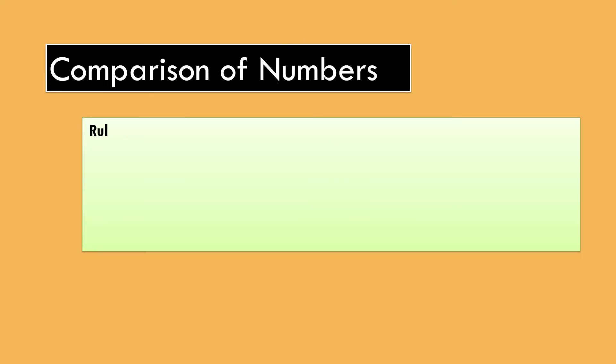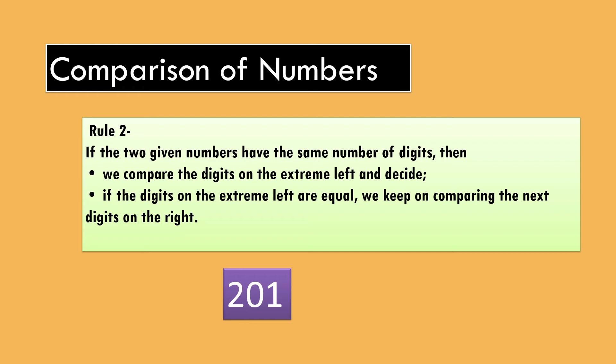Rule 2: If the two given numbers have the same number of digits, then we compare the digits on the extreme left and decide. If the digits on the extreme left are equal, we keep on comparing the next digits on the right. So here, in this example, 211 is greater than 201.